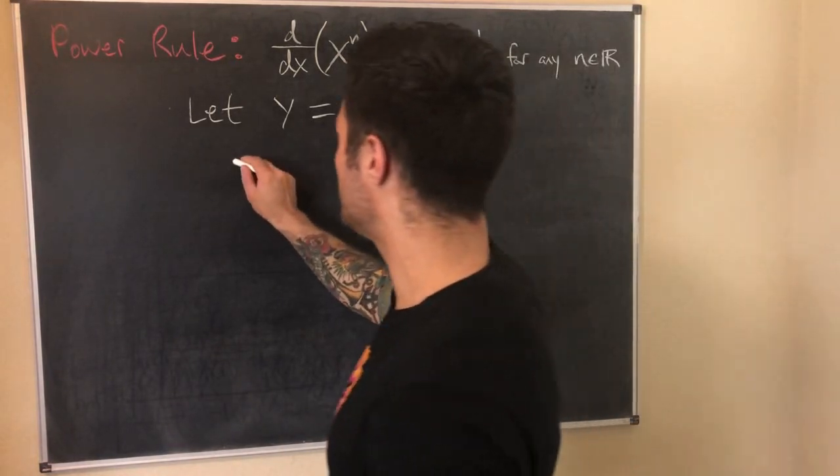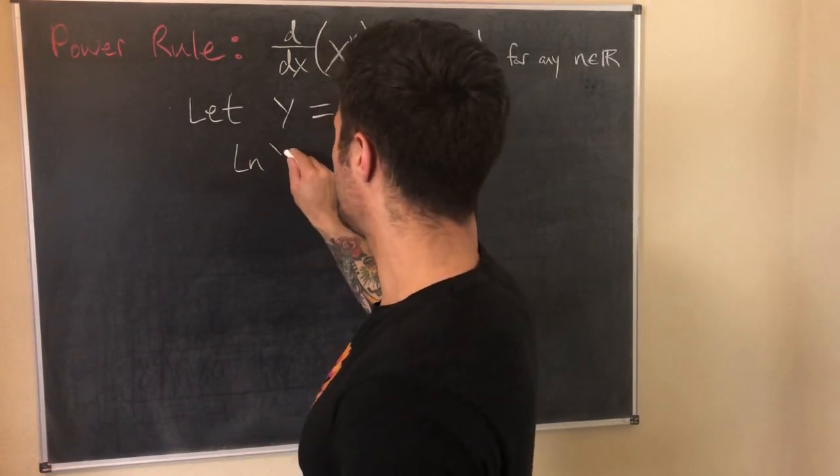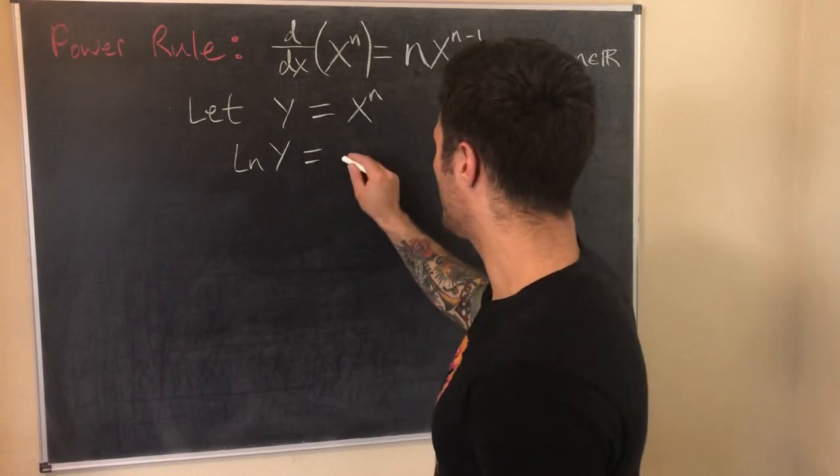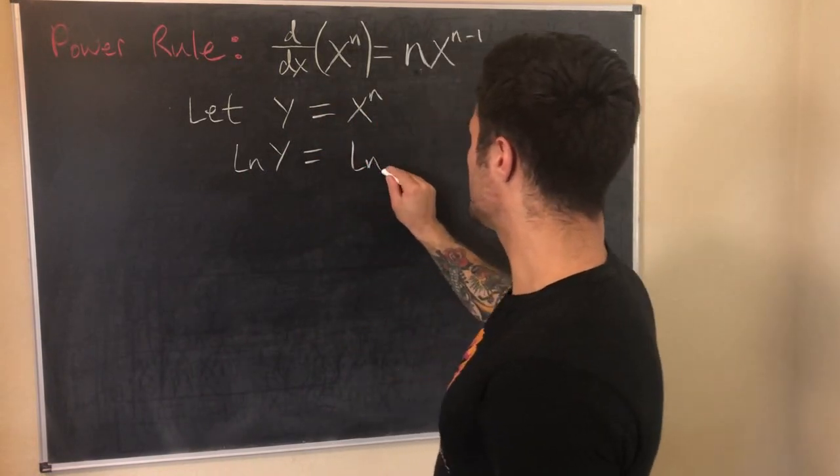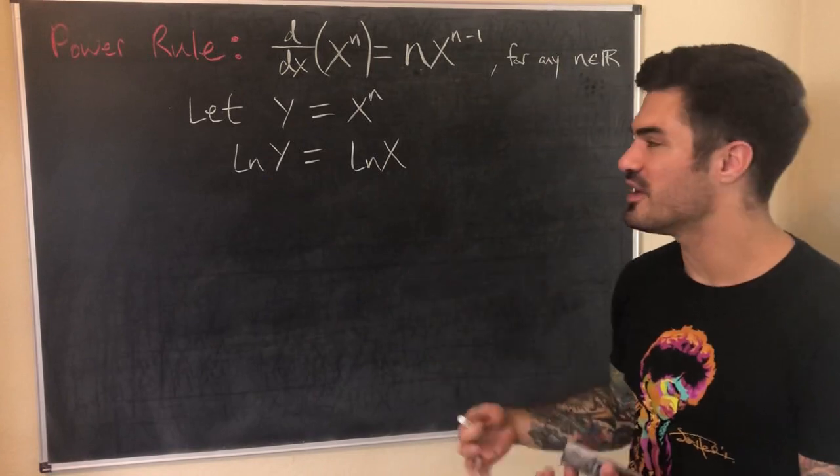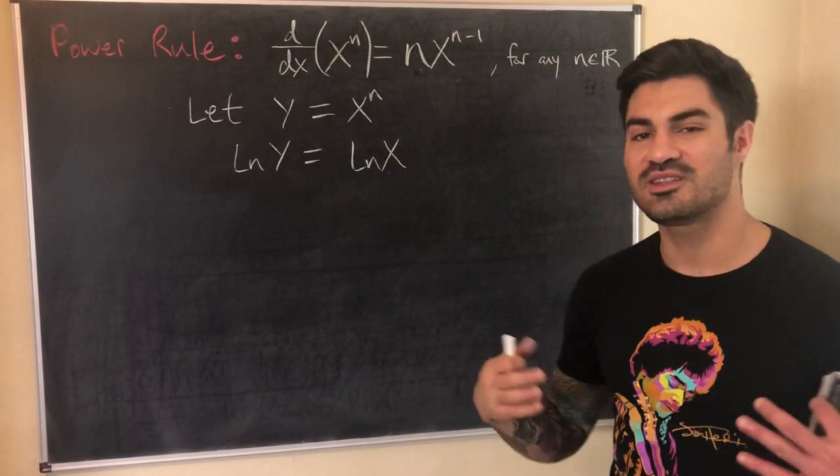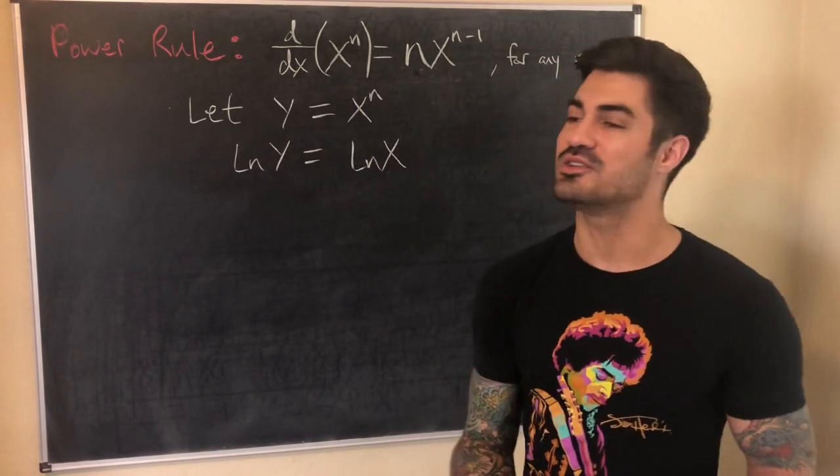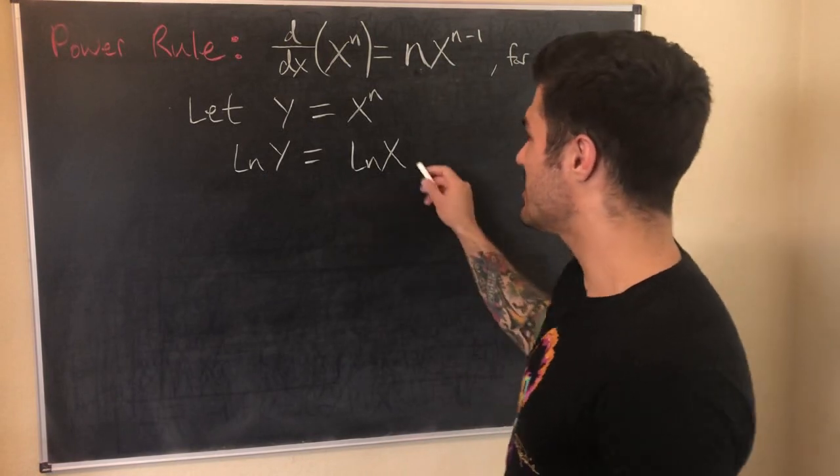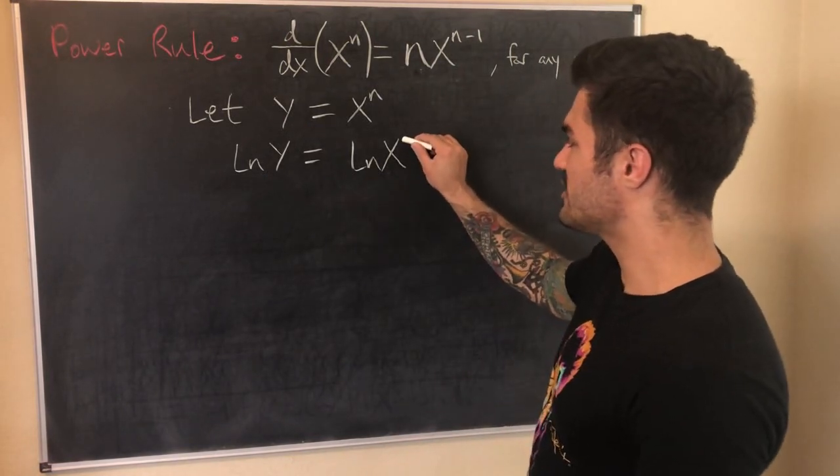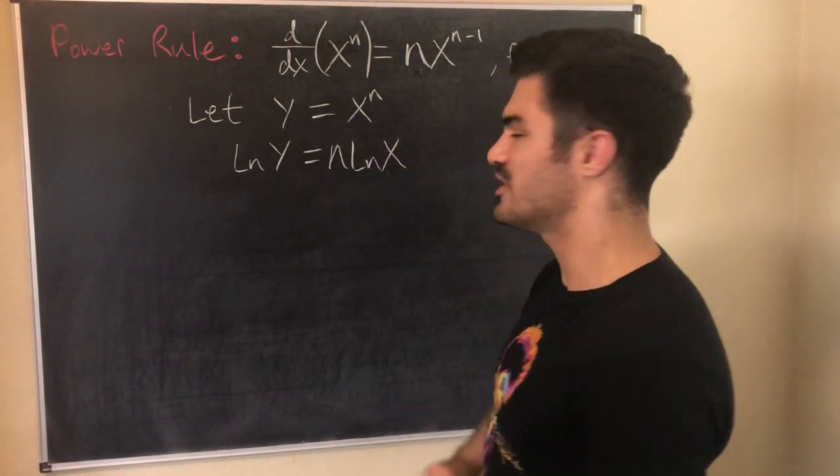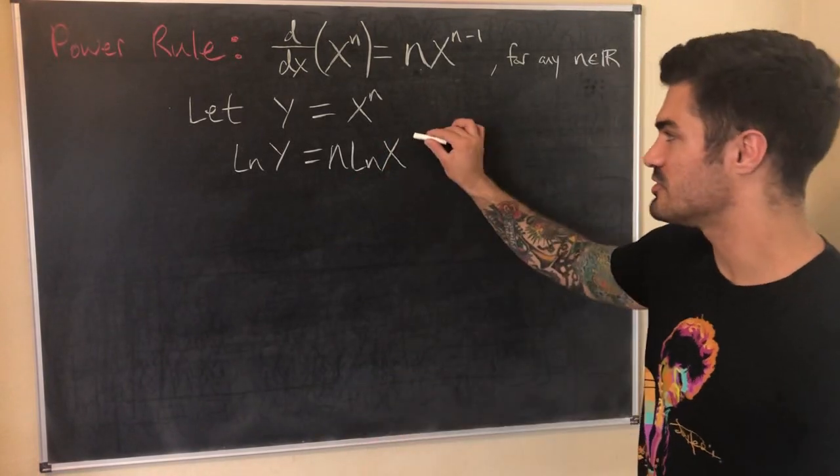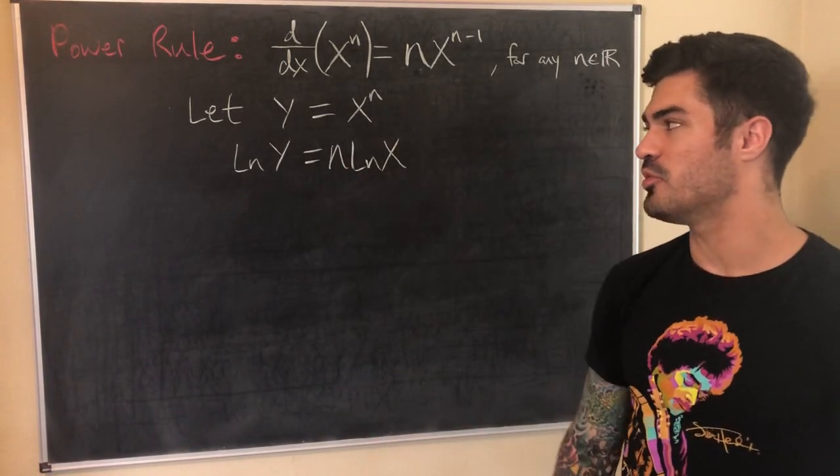So my first step is I'm going to take the natural log of both sides. So this is where that logarithmic differentiation comes into play because a lot of times when we have functions and we're trying to find the derivative and that sort of thing, we take the natural log, it makes our lives a little easier. So using my log rules, I have x to the n. I can bring the n out in front. That's just the properties of logarithms. So ln(y) = n·ln(x).